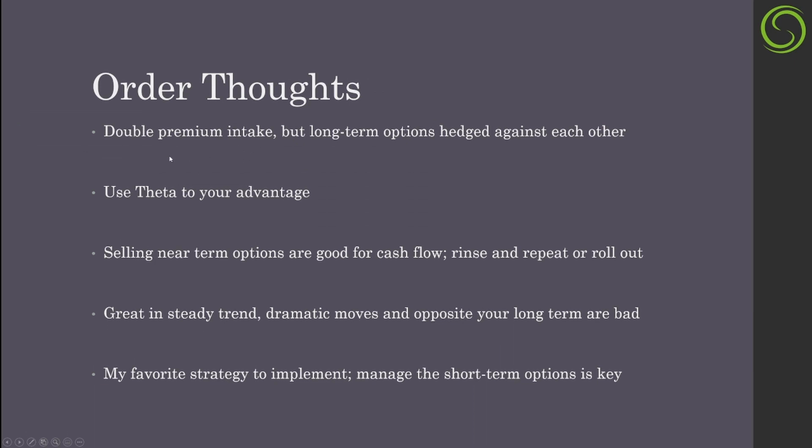Some quick thoughts on this order: you get double premium intake since you're selling both a call and a put, which is fantastic. The long-term options are hedged against one another. One issue with a standalone call or put calendar/diagonal is that if the stock makes a dramatic move against you, the long-term option loses value that the short-term premium can't cover. With the double diagonal, the long-term calls and puts actually hedge each other out.